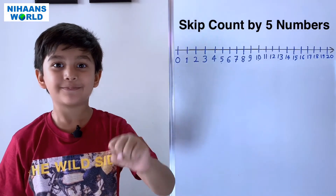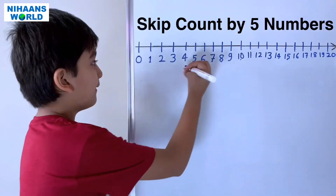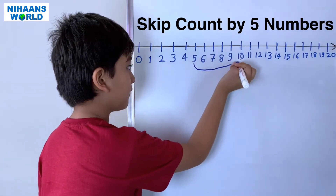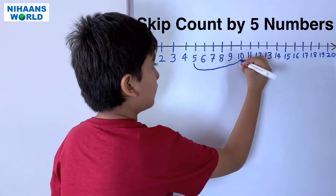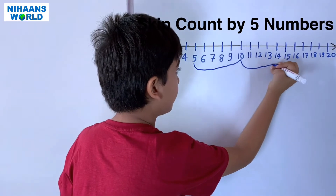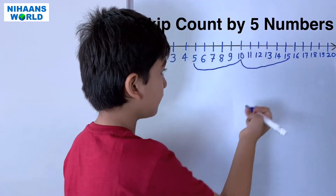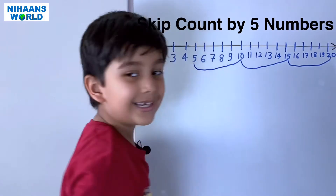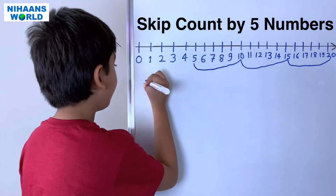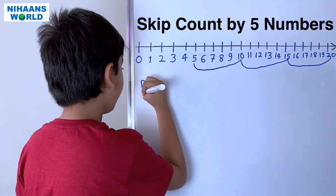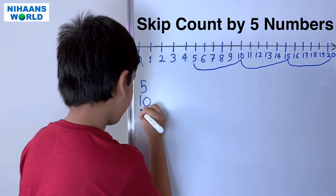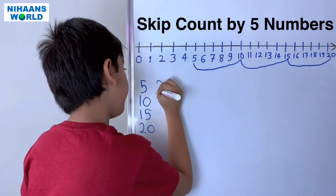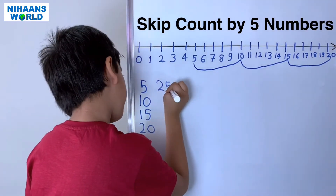Let's see another example. Skip counting by five: five to ten, ten to fifteen, fifteen to twenty, twenty-five. The sequence is five, ten, fifteen, twenty, twenty-five, thirty, and so on.